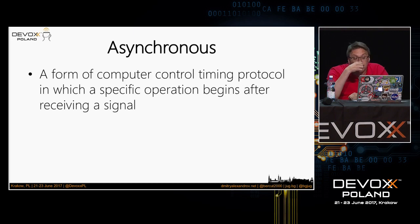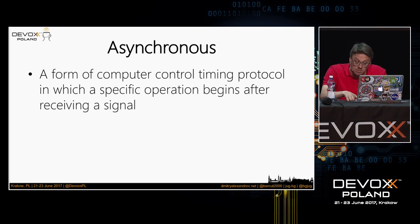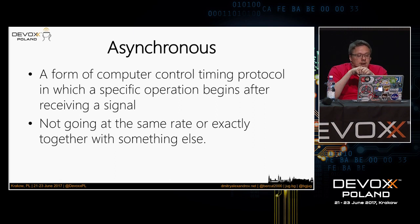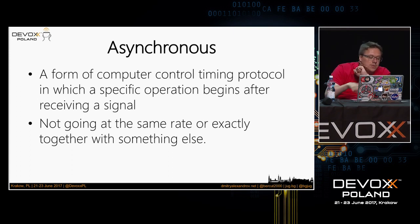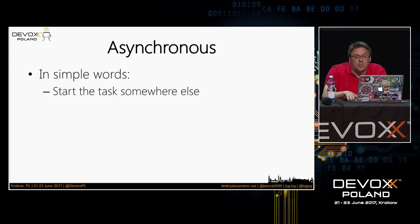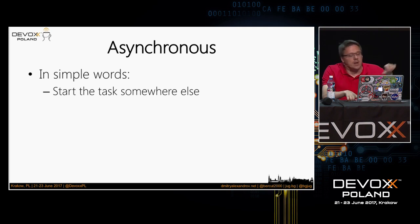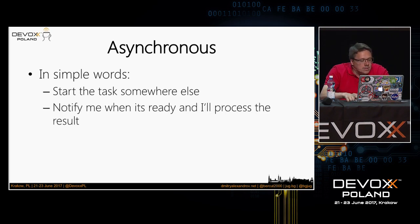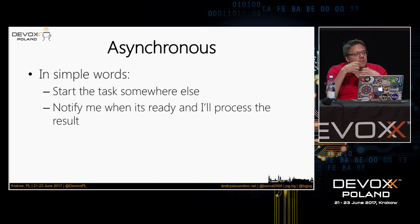What did I get from Wikipedia? What is asynchronous? Asynchronous is a form of a computer control timing protocol in which a specific operation begins after receiving a signal, and the operations are going not at the same rate together with something else. In simple words, we start tasks somewhere else — somewhere in the background. After the task is ready, we want to be notified that we have the result, and we then need to take this result and process it.